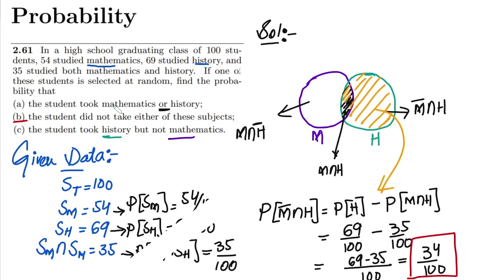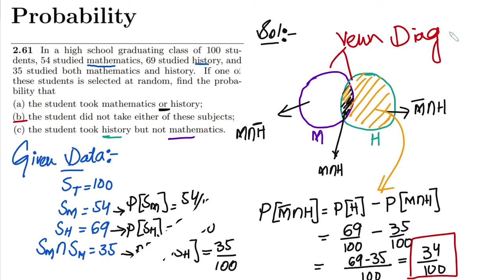That is basically the solution of part C. We've seen the Venn diagram with which we represented and solved all parts of the question. That's it for today and I'll see you with some more interesting stuff in our upcoming video. See you soon.